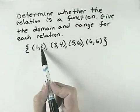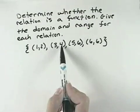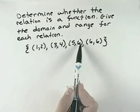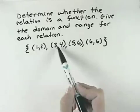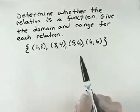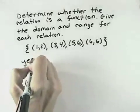Looking at this particular relation, we can see that x = 1 goes to y = 2, x = 3 goes to y = 4, x = 5 goes to y = 6, and x = 6 goes to y = 6. Each x is listed only one time, so it can only go to at most one y. Yes, this is a function.